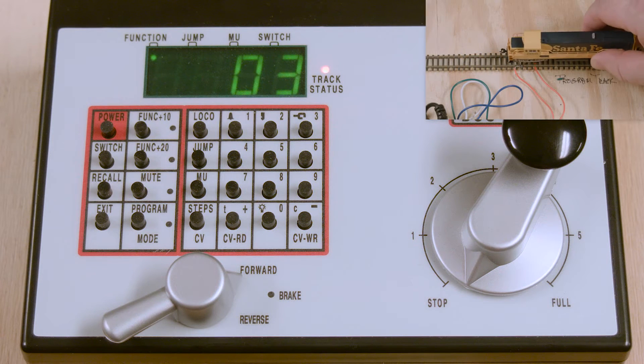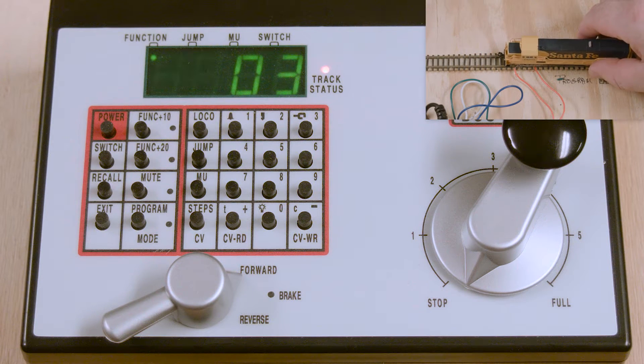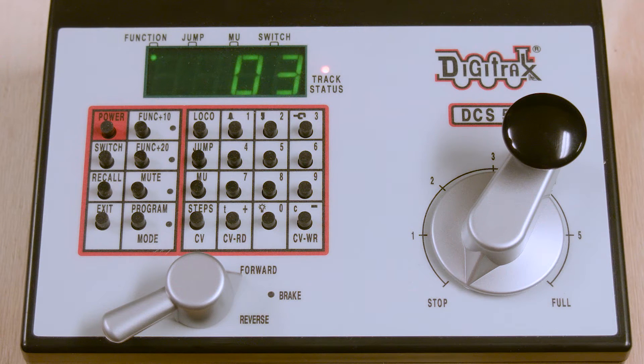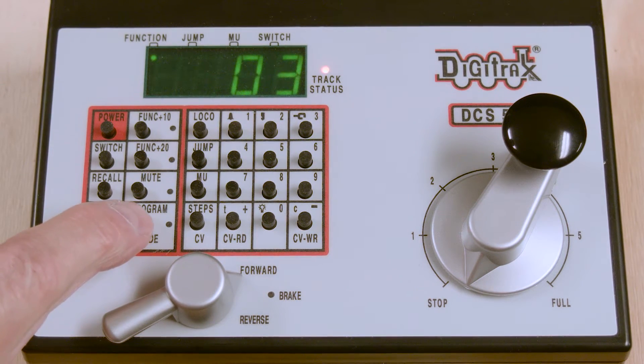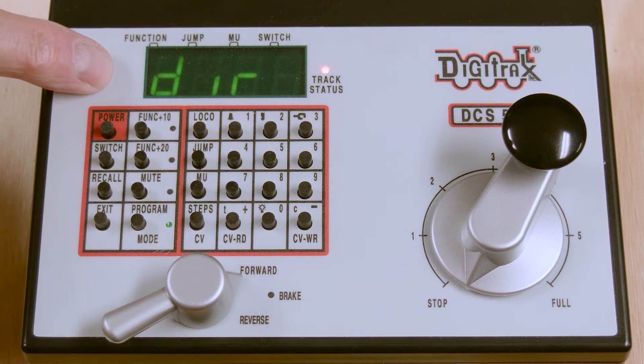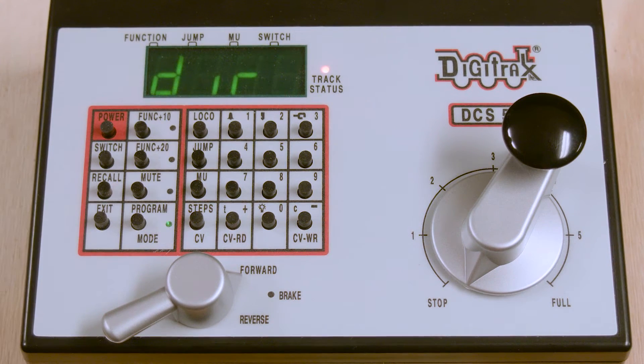To begin programming, we have our locomotive on the program track, the DCS-51 turned on, and we go into program mode by pressing the program key. In this case we have direct mode programming indicated by DIR in the display.